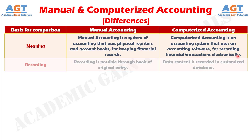Number 2. In manual accounting, recording of the transaction can be done through the book of original entry, that is, journal day book. Conversely, in computerized accounting, the transactions are recorded in the form of data in the customized database.